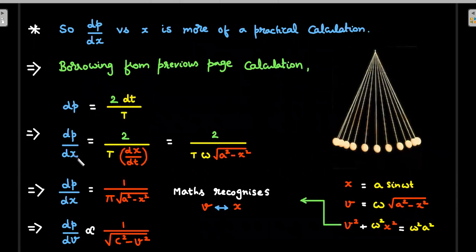So once you understand the practical calculation, we'll try to borrow the previous space dp is equal to in terms of dt and forcibly introduce a dx. So I divide by dx, I bring dt down, write it as dx/dt, and in one dimension it is velocity. And I'll borrow this expression for velocity here, and t into omega is 2π, and 2 gets cancelled, and you end up getting this expression.